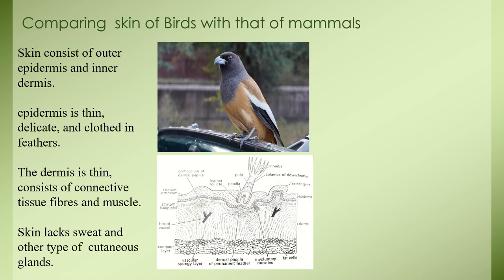Bird skin consists of two basic layers: epidermis and inner dermis. The dermis is thin and delicate, clothed with feathers, which are the characteristic feature of birds. Several types of feathers cover the body. The dermis consists of connective tissue and muscle fibers. Bird skin lacks sweat and other sebaceous-like glands. The only cutaneous gland birds possess is the oil gland located on the tail, which is common to all birds.